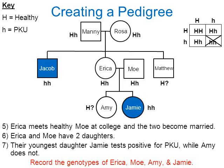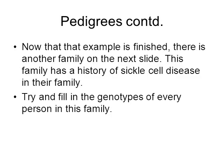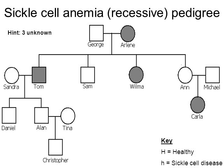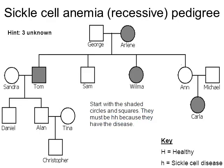Now there's another practice family with a history of sickle cell disease — just like PKU, it's autosomal recessive, so you must inherit two lowercase h's to have the disease. Try to figure out the genotypes of everybody, but note the hint: you will not be able to solve three people in this family. Start with the four symbols that are shaded in — they have to be lowercase h, lowercase h — homozygous recessive, because that means they have the disease.